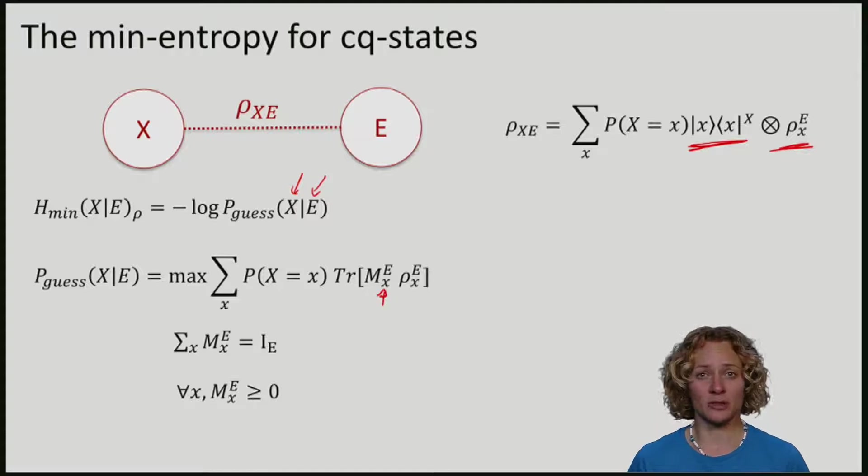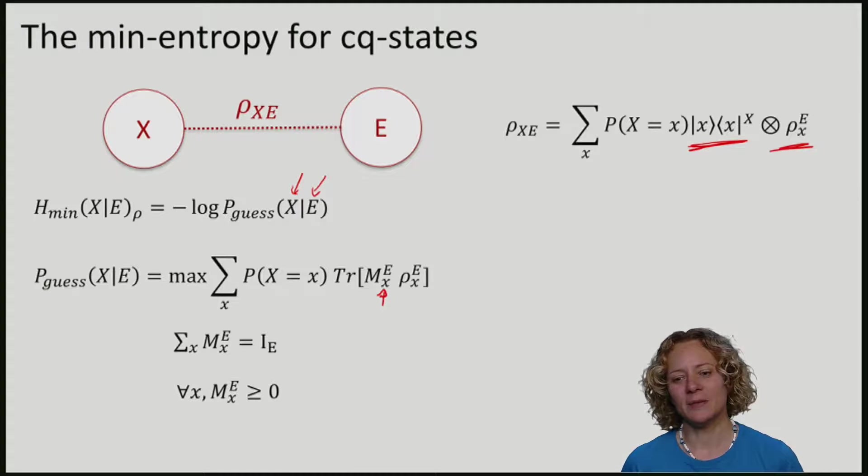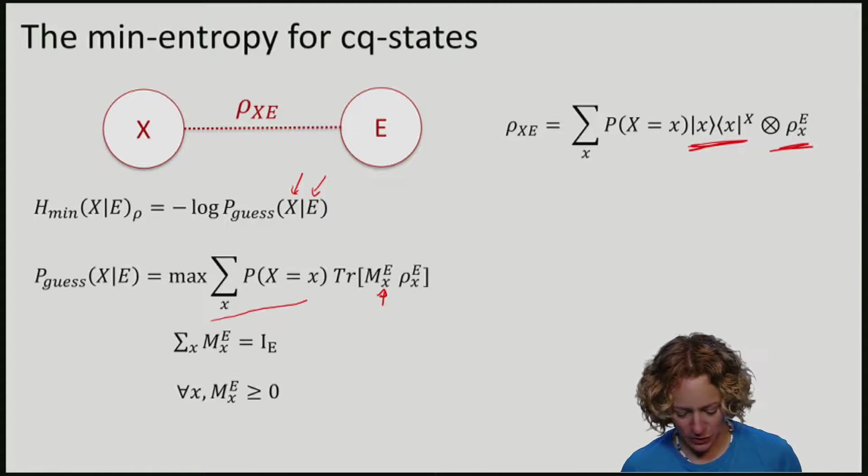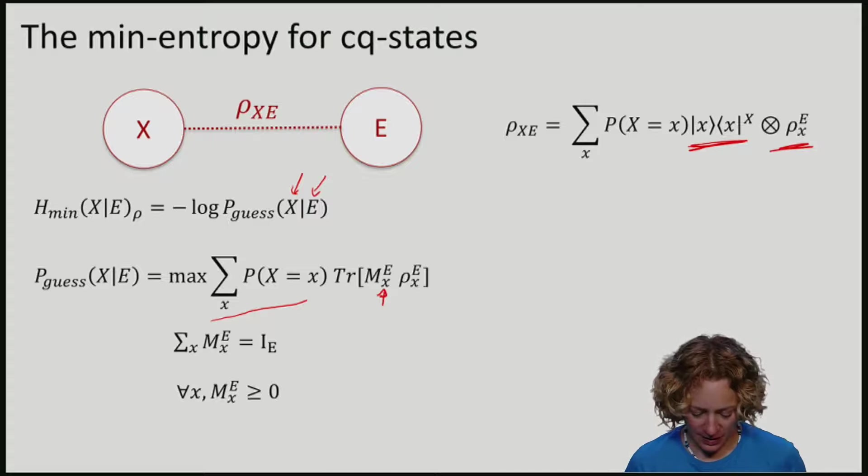If I measure the outcome x, my guess will be that I have the string x. The guessing probability is the probability that averaged over the choice of string, I produce the right guess, meaning that given that the state really was rho_x, I identify it correctly.